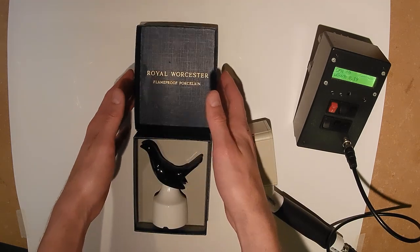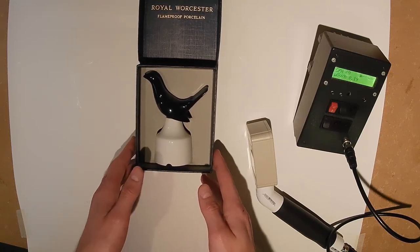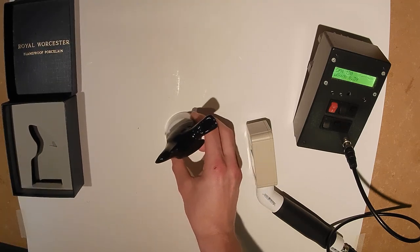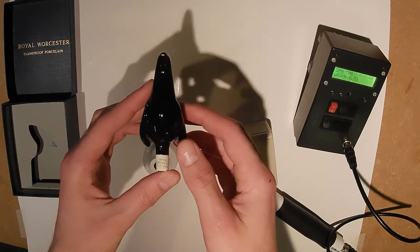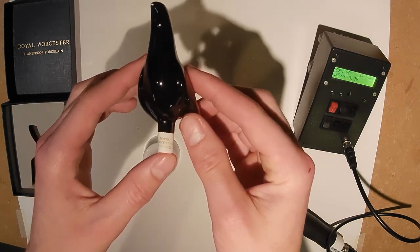Last but not least is this Royal Worcester Pie Bird. It's from England and sports an unusual black uranium glaze. There are a few other known sources for black uranium glaze, but this one is one of the more novel ones. It measures in at roughly 3,000 counts per minute.